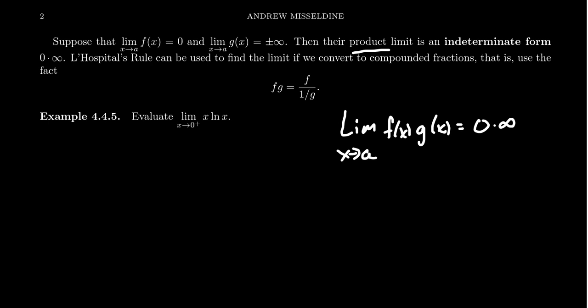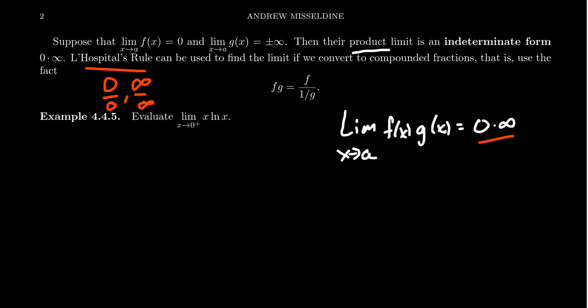If we're being honest, L'Hôpital's rule only applies to the indeterminate forms zero over zero and infinity over infinity. It doesn't apply to the indeterminate form zero times infinity directly. But it turns out that any product can be turned into a quotient: f times g is the same as f divided by the reciprocal of g. So you can push g to the denominator, giving zero over one over infinity, which becomes zero over zero. Or push f into the denominator, giving g over one over f, which looks like infinity over infinity. Push the simpler of the two functions into the denominator, since you'll need to take its derivative, and then we can turn these product indeterminate forms into quotient indeterminate forms for which L'Hôpital's rule applies.